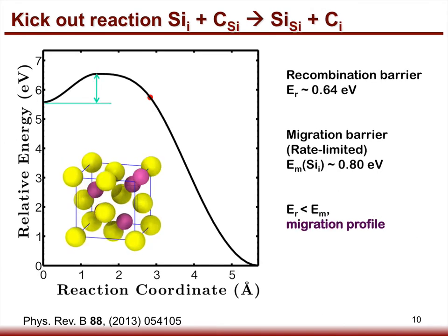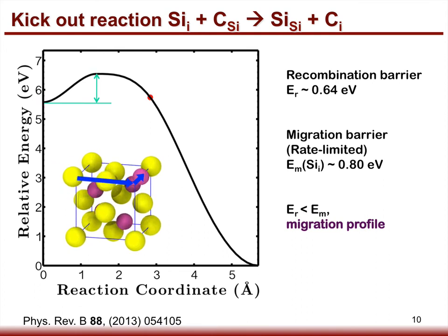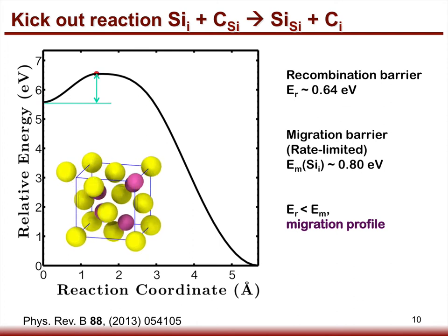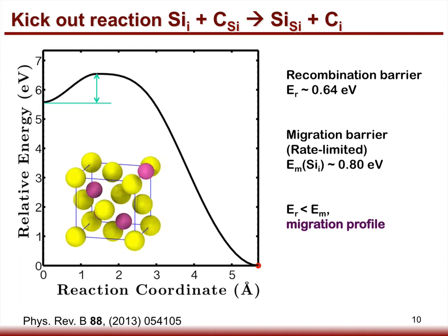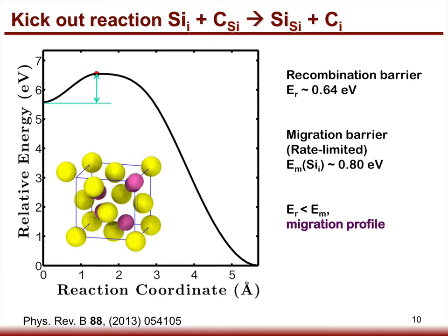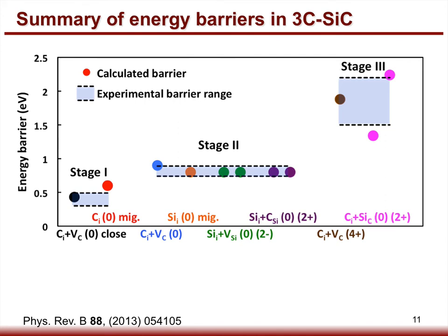For the other kick-out reaction, the silicon interstitial atom can directly kick out the carbon antisite and form a carbon interstitial. The recombination barrier is 0.64 eV, which is smaller than the migration barrier of the silicon interstitial. As mentioned before, this energy landscape has a migration profile, and the rate-limiting barrier is the migration barrier, which is about 0.8 eV.